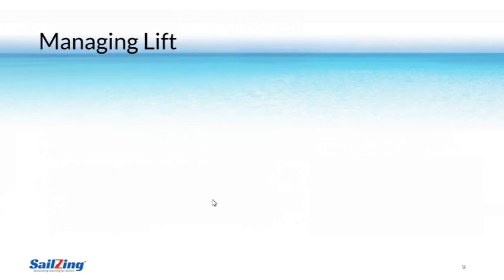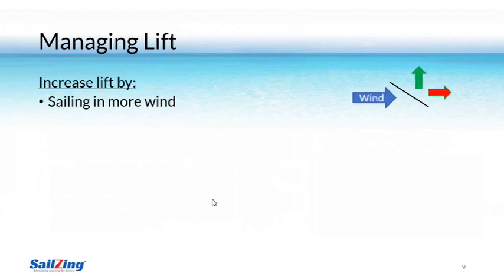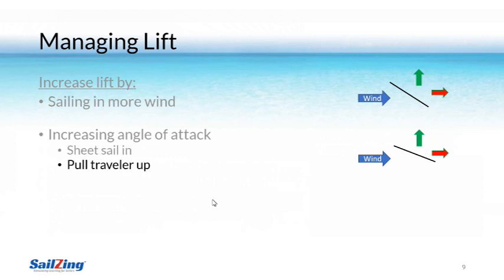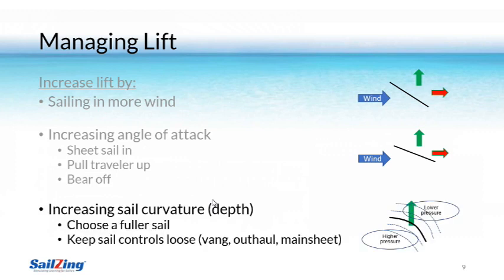Now let's talk about managing lift and drag while sailing. We obviously want to maximize lift to go fast. There are three ways to increase lift. First, you can sail in more wind since stronger wind obviously means more lift. Second, you can increase the angle of attack to deflect the wind more — you do this by sheeting in the sail more, pulling the traveler up, or bearing off away from the wind. Third, you can put more curve in the sail by choosing a fuller sail or loosening the sail controls. Of course, any time you increase lift you also increase drag.